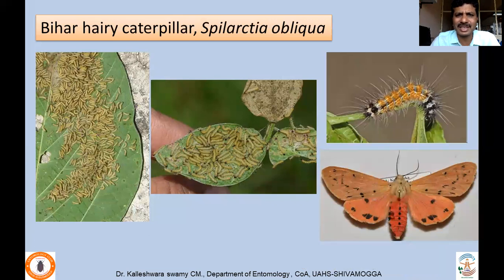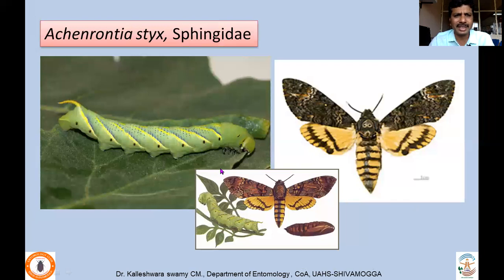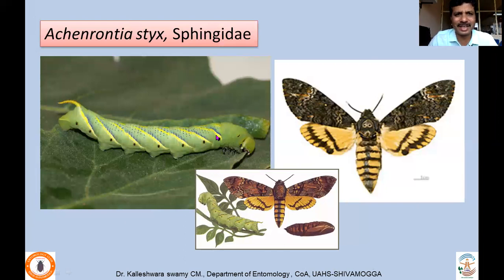Another polyphagous pest occurring in minor proportion on various pulses is Spilarctia obliqua. When the caterpillars hatch from the eggs, they congregate and act as skeletonizers, removing the green matter. Later they scatter and feed on the entire plant individually. The caterpillar grows very large, and a single caterpillar may be enough to remove the foliage of an entire plant.